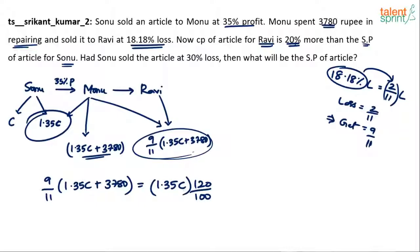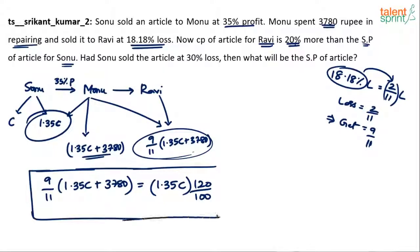So the equation is: (9/11) × (1.35C + 3780) = 1.2 × 1.35C. This is one equation in one variable. Solve for C and you will get the final answer.